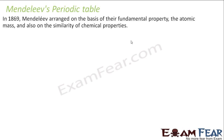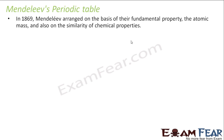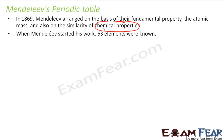Now let's understand the Mendeleev periodic table — the best periodic table, the best effort. He arranged the elements based on their fundamental properties: atomic mass and chemical property. Chemical property was given the first priority. At that time there were 63 elements known, so his work was on these 63 elements.